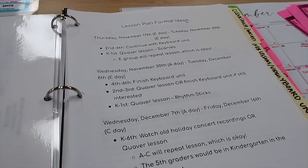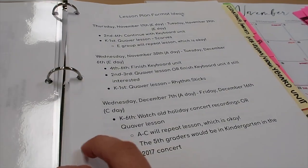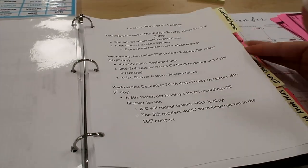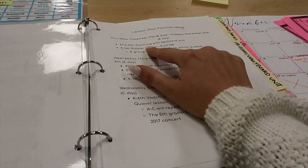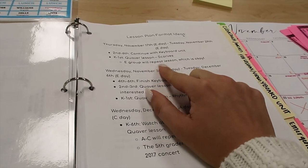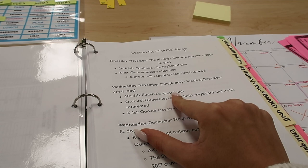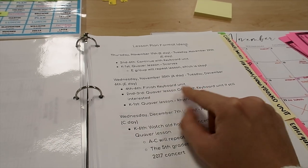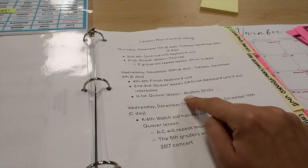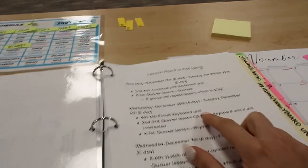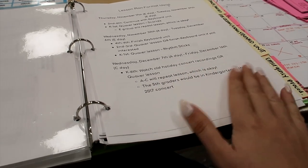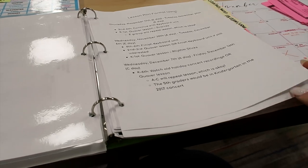Here is my lesson plan format idea. I don't care really what she does, honestly, as long as the kids are entertained and doing something kind of musical. So I left a bunch of stuff, but this is what I would prefer. Which is the first week and a half to continue with the keyboard unit for 2nd through 6th grade and then start my Quaver lessons with K to 1. Then the next week, finish the keyboard unit with 4th through 6th, start my Quaver lessons with 2nd through 3rd, or if they're really still interested, finish the keyboard. But I think they'll be over it by then. And then K to 1 Quaver lesson on rhythm sticks. Then the last week, watch the holiday concert recordings or do a Quaver lesson. Honestly, most kids are going to want to watch the old concerts because they're in them and they love seeing themselves.